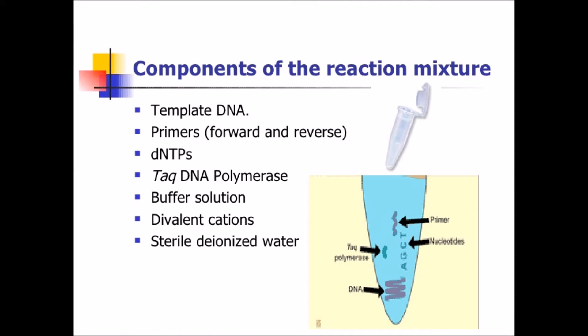There are three major steps in a PCR, which are repeated for 30 or 40 cycles. This is done on an automated cycler, which can heat and cool the tubes with the reaction mixture in a very short time.